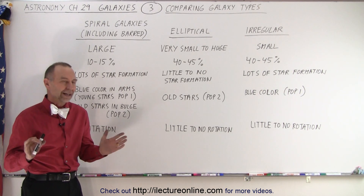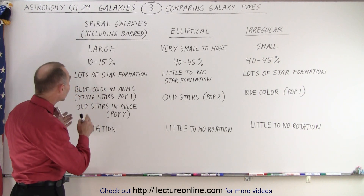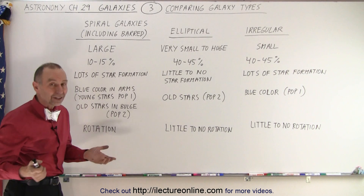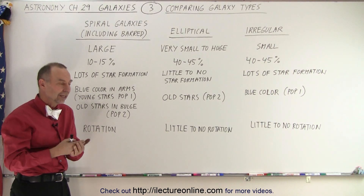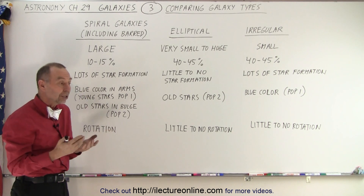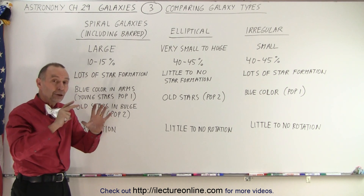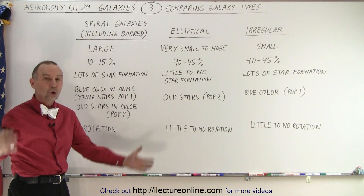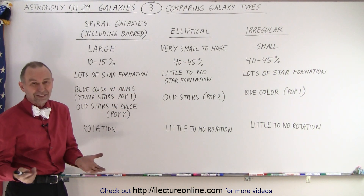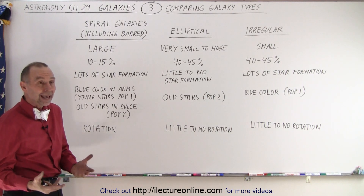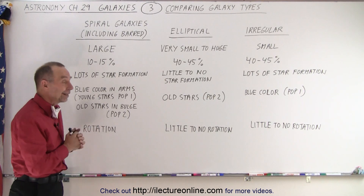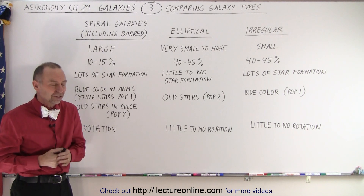First of all, size. The spiral galaxies by and large are large galaxies. Our Milky Way galaxy is a spiral galaxy, and so is the Andromeda galaxy, and so is M33, which is the galaxy in Triangulum. Those are the three large galaxies of our local group. There are roughly 50 or so galaxies in our local group, and the three largest are indeed spiral galaxies.